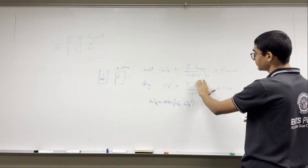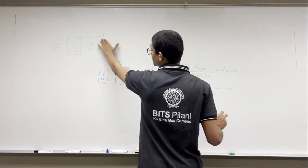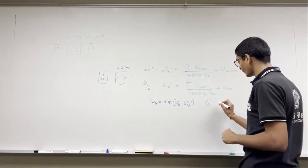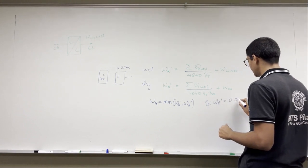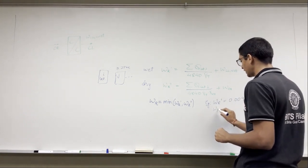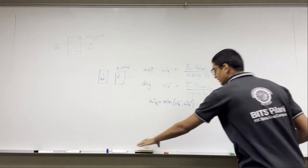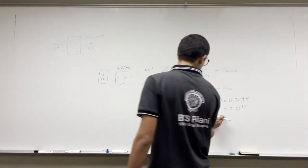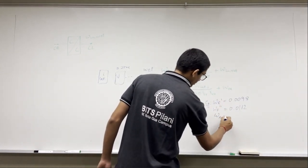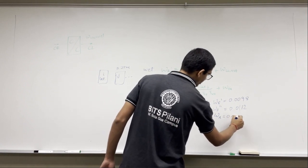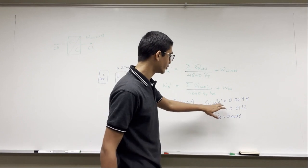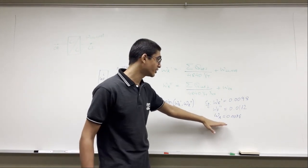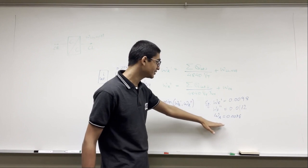Omega_r, which is the minimum of the two, is 0.009. That means the minimum condition is coming from omega_r prime. Omega_r prime represents a wet coil condition, which indirectly means that in this specific case we have a wet coil. That's the way we find out the value of omega_r.